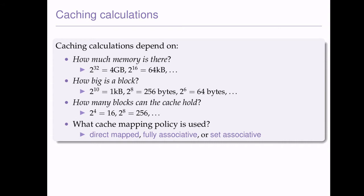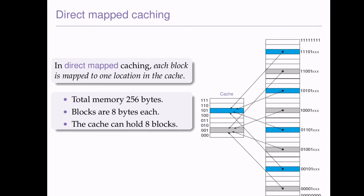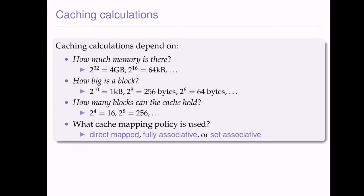Our calculations depend on how much memory there is, how big a block is, or how many blocks the cache can hold. We need to know how many blocks there are to understand how many bits we need to represent each block — we need to give each block an address in the cache. Similarly, how much memory there is: if there's 2 to the 32, that means we're using 32-bit addresses.